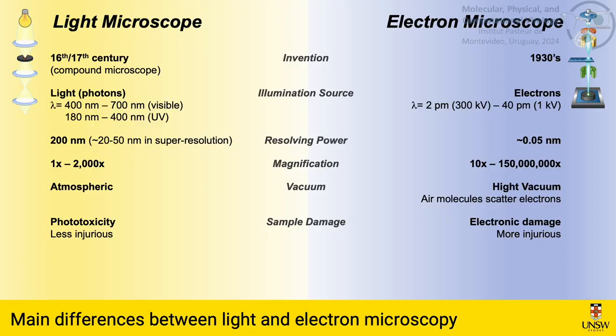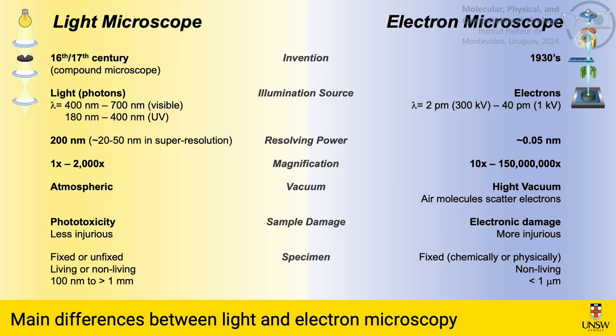Just to give you an idea about this damage: being in the column of an electron microscope is for a biological sample the same level of energy as being less than 5 meters away from the point of explosion of a 50-ton nuclear bomb. That is a lot of energy. Finally, all these facts also determine that while in the light microscope we can observe fixed or unfixed samples — meaning living or non-living samples — in the case of the electron microscope, we need to fix our sample either chemically or physically. Additionally, the penetration power of the light microscope is much higher than that of the electron microscope, which is limited to less than one micron in thickness.